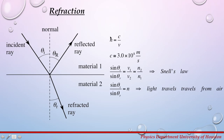The index of refraction for any material is given by the equation n equals c over v, where c is a constant equal to 3.0 times 10 to the 8 meters per second, and v is the velocity of light in that particular substance.